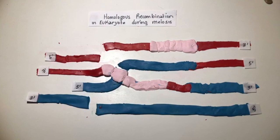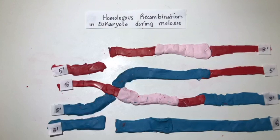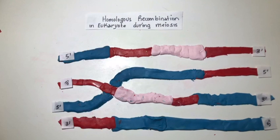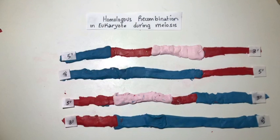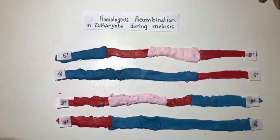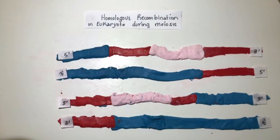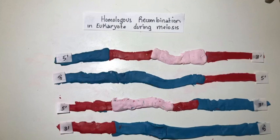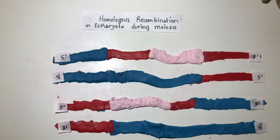Depending on the way the GEN1 protein cuts the substrates, the homologous recombination process can either end in crossover or non-crossover. In this case, the way the GEN1 protein cuts the substrates results in crossover.